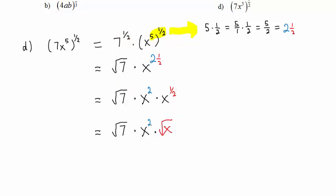So we have square root of 7 times x squared times square root of x. This gives us x squared times square root of 7x. Hope this helps. Thank you.